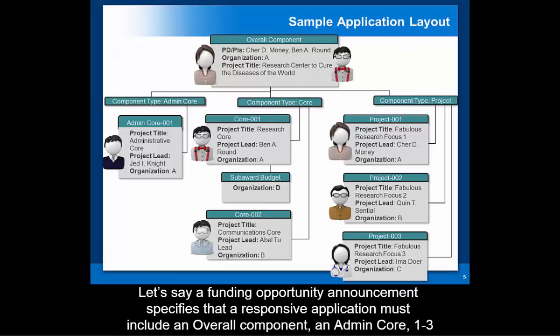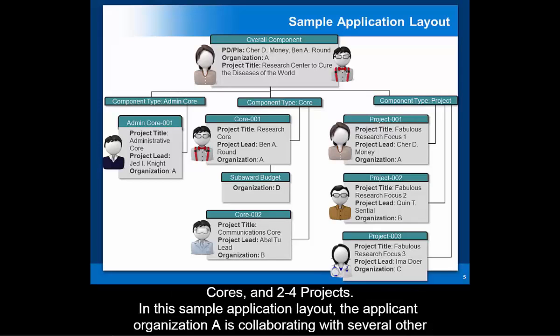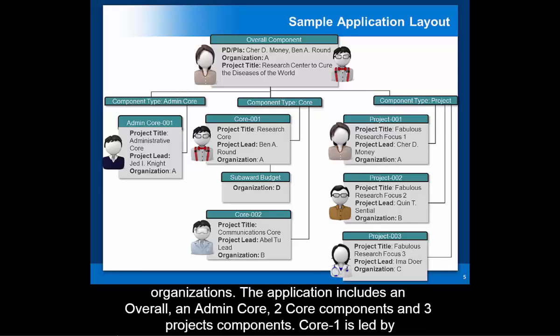For example, a Funding Opportunity Announcement may specify that a responsive application must include an overall component, an admin core, one to three cores, and two to four projects. In a sample application layout where the applicant organization A is collaborating with several other organizations, the application includes an overall, an admin core, two core components, and three project components.